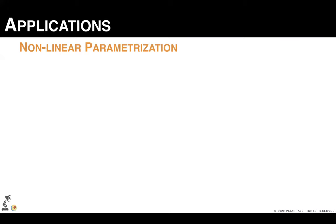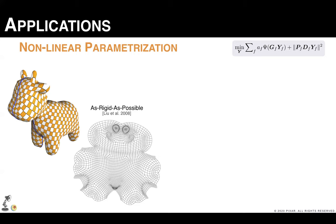With our discrete operators, we can also compute nonlinear parameterization for polygonal meshes. This was not possible before with previous polygonal methods. Here we minimize any choice of a distortion function we desire, and we combine it with our projection term.